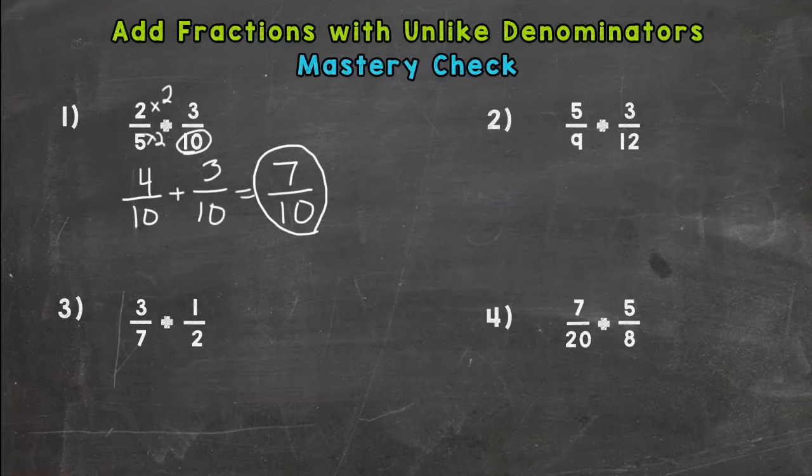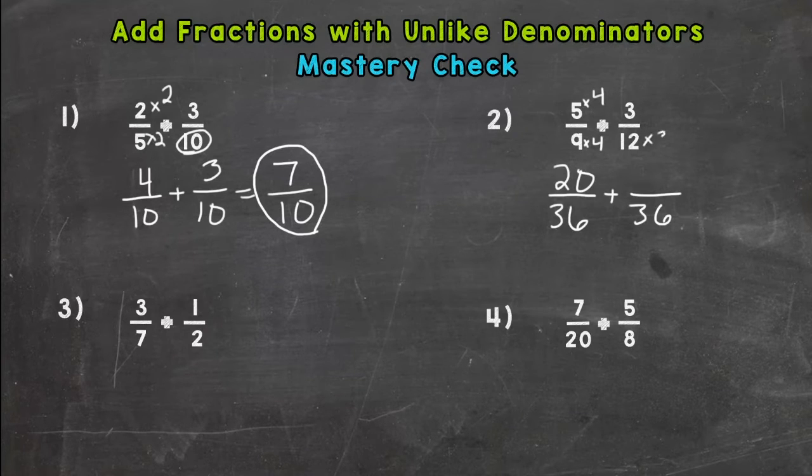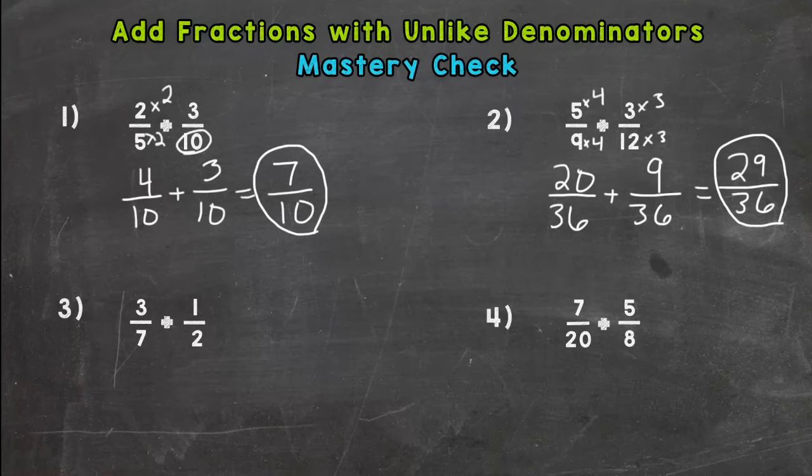Number two, nine and 12, that common denominator is a little harder to find than the one we had for number one. So you might have needed to write out your multiples lists and see which one they have in common, the least one they have in common. And you should have come across 36. Nine times four is 36, so we need to multiply the five by four to rename it. Five times four is 20. Twelve times three is 36, so we need to do that to the top to rename it. Three times three is nine. And we get to 29 over 36. The only common factor between 29 and 36 is one, so we are done.